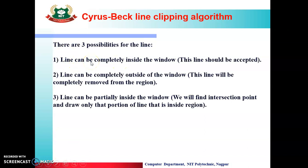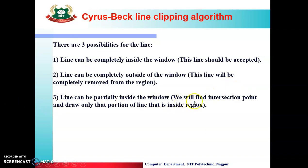As said previously, when we have a line, there are three possibilities. The first possibility is that the line can be completely inside the window. If the line is completely inside, we will accept that line and display it on the screen. The second possibility is that the line can be completely outside the window. If the line or object is completely outside the window, then we completely remove that region and do not display that part on the screen. The third possibility is that the line can be partially inside the window.